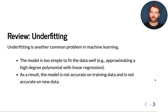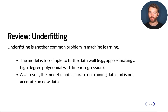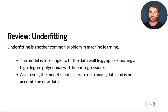The converse problem of overfitting is underfitting, which happens when our model is too simple for the data that we have. For example, if the data is better described by a high-degree polynomial but we try to use linear regression, then we will not fit the training data well, and therefore we will also not be accurate on new data which comes from the same distribution as the training data.